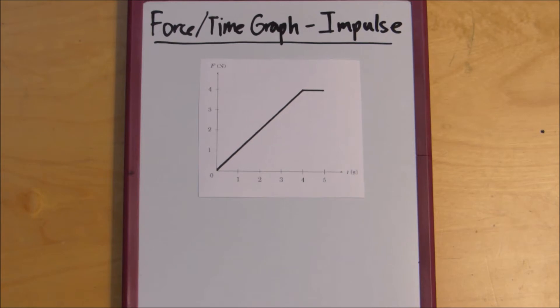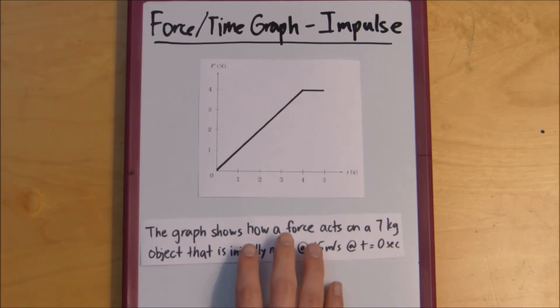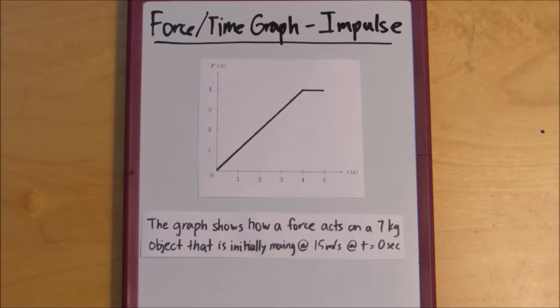And we're given this information. The graph shows how a force acts on a 7 kilogram object that is initially moving at 15 meters per second and time equals 0 seconds.